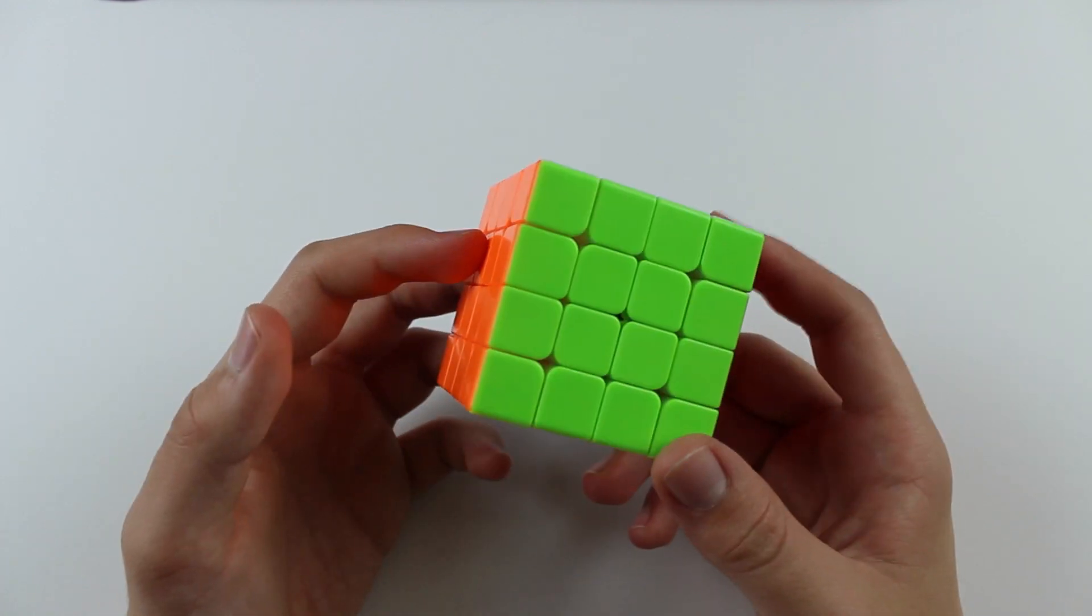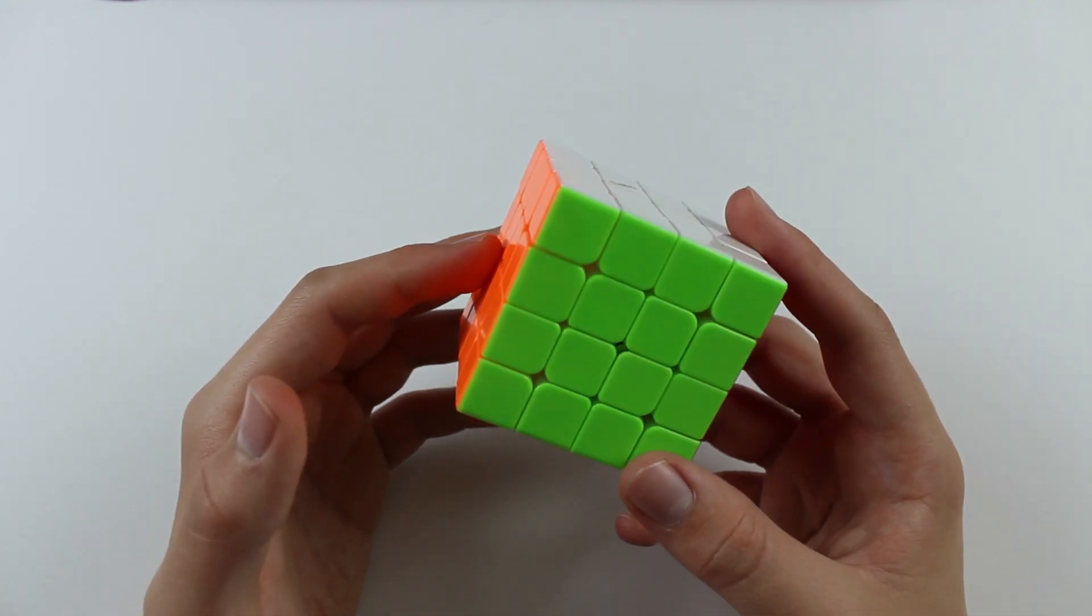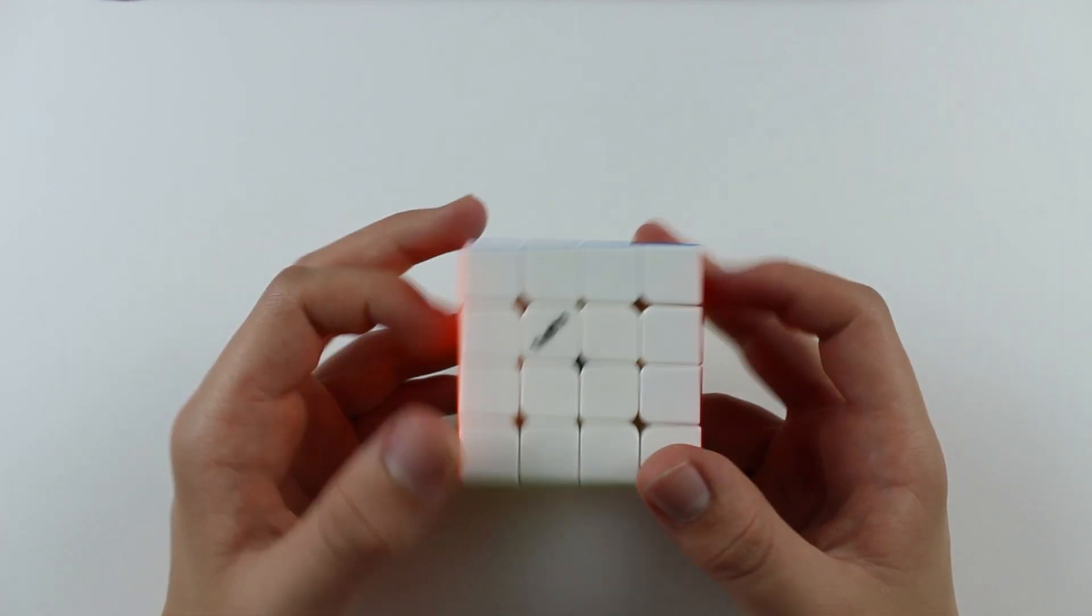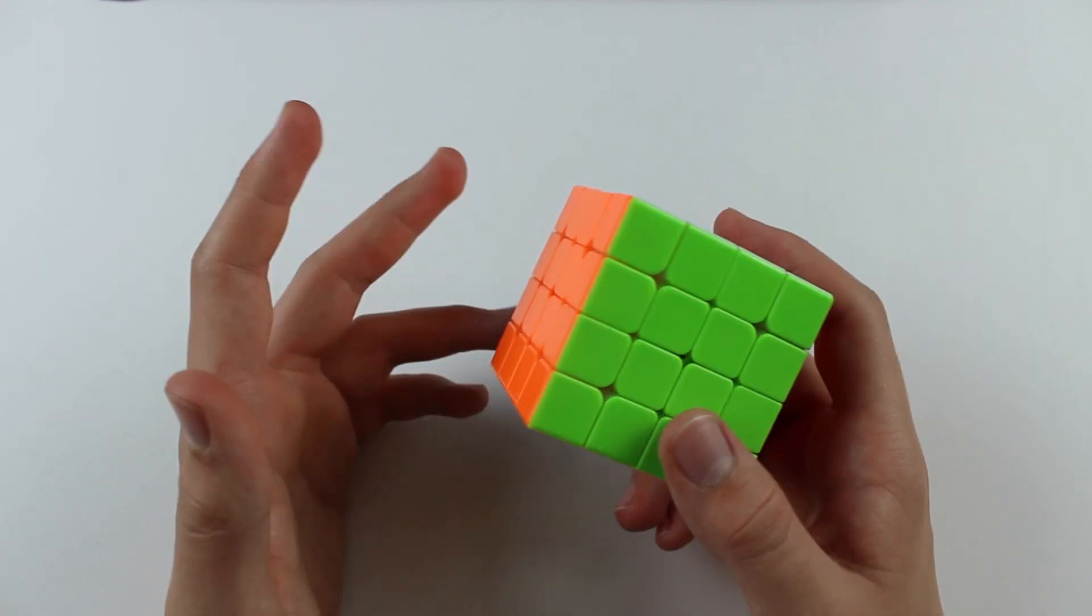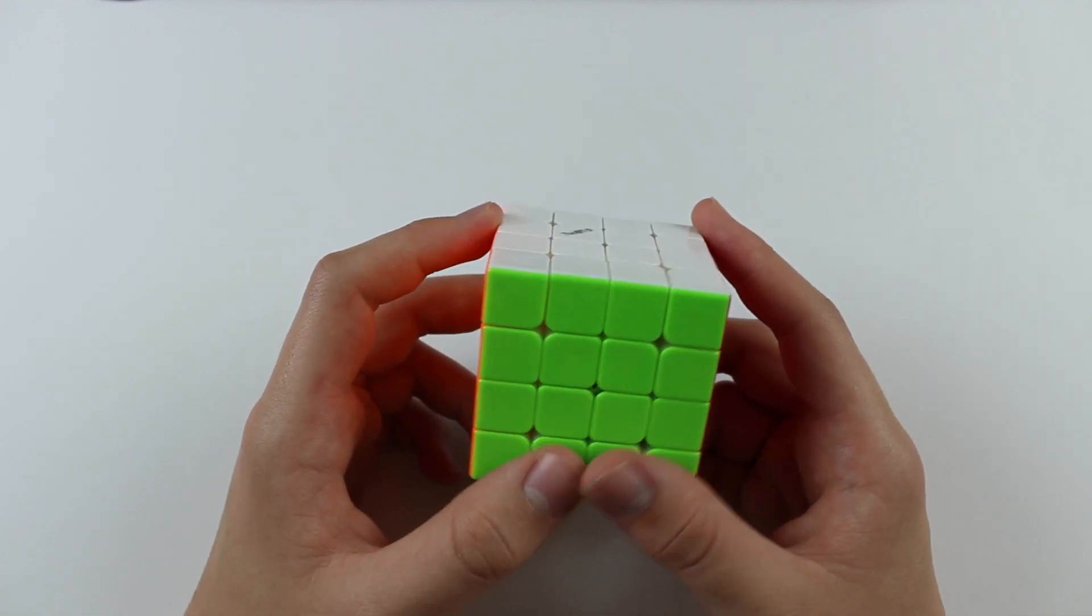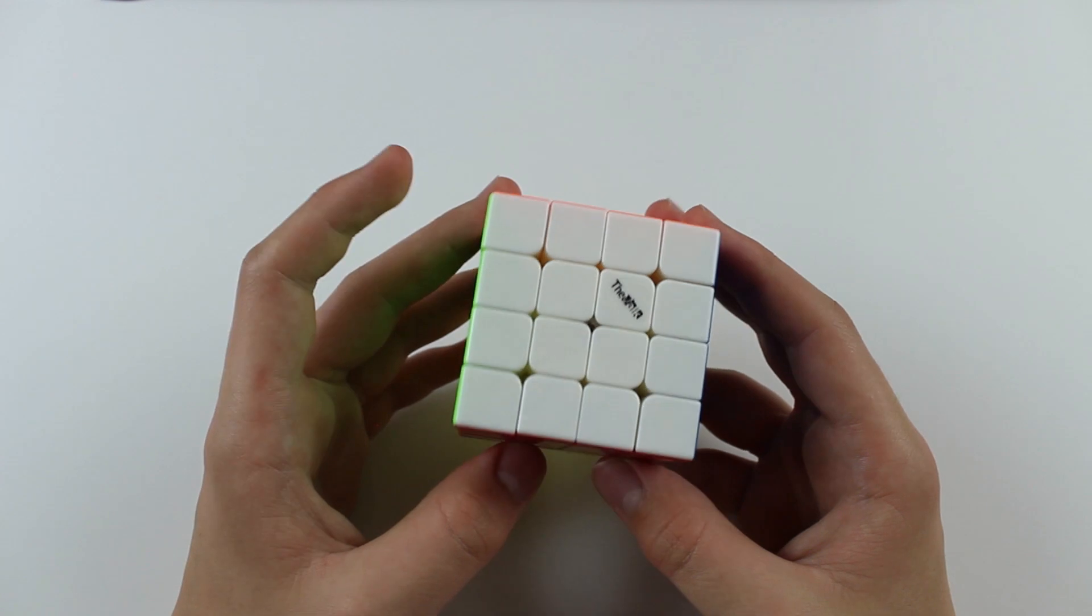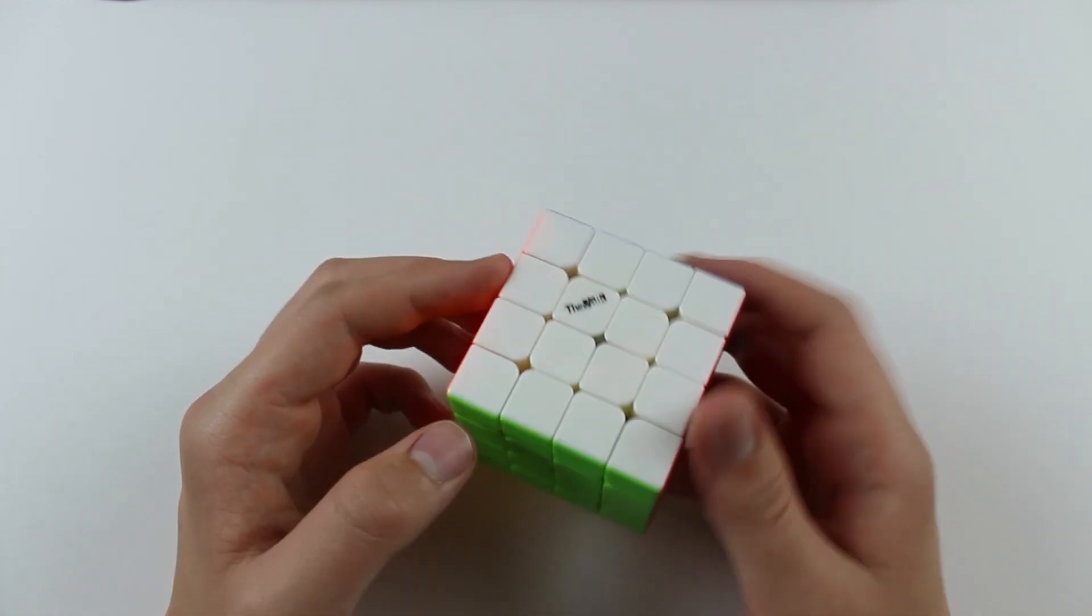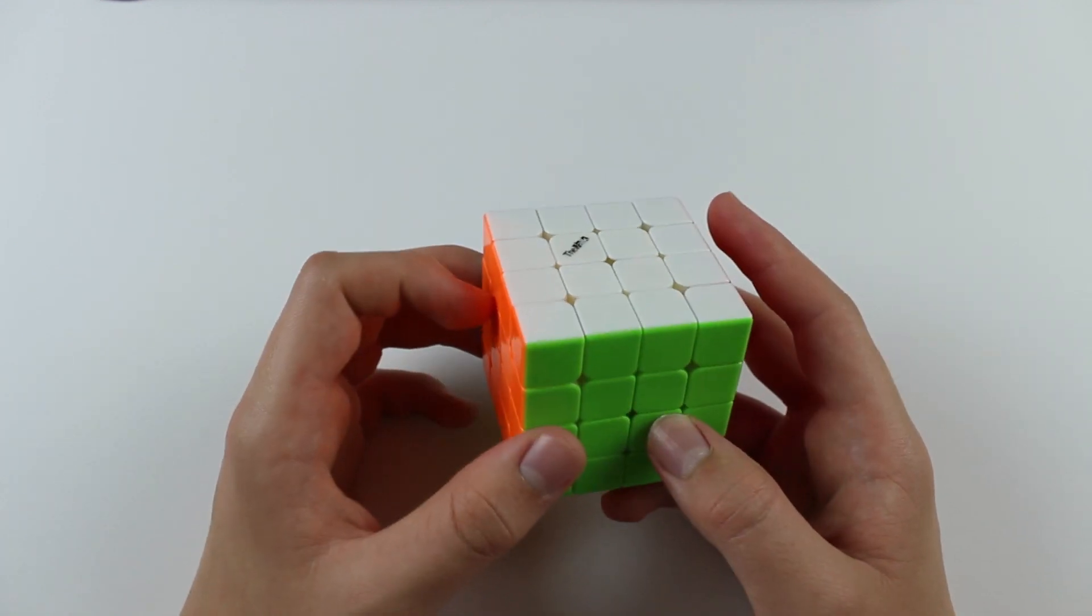So this isn't really ideal for something that's considered to be a high-end 4x4, or at least coming from a very high-end company in a good line of cubes. I use the Valk 2M, the Angstrom version, as my main 2x2, and the 3x3 Valk 3 is also quite good. But the 4x4 doesn't really live up to the expectations I would have had for it.